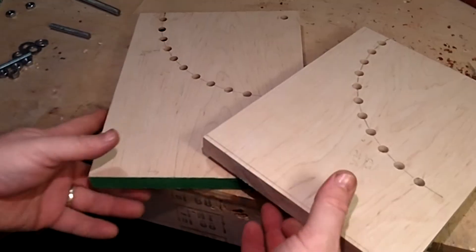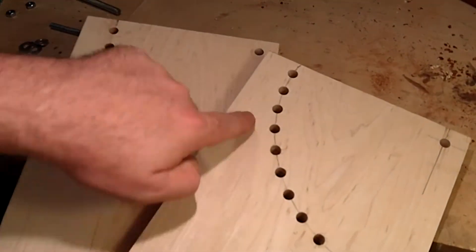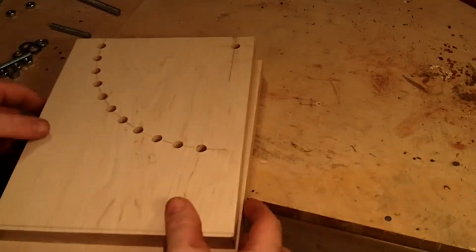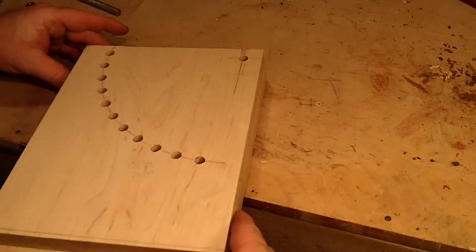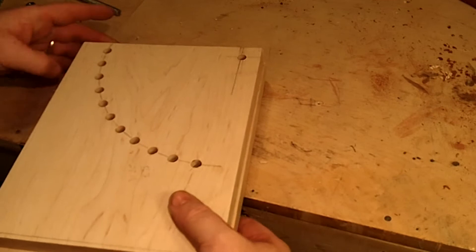Okay, we're going to continue on with the cradle. And here you have your two side pieces with the holes drilled out in the arc. You also have your hinge hole up in the top corner.